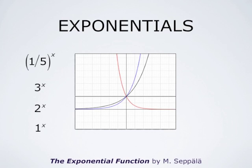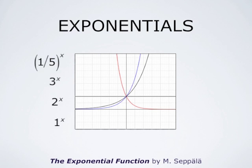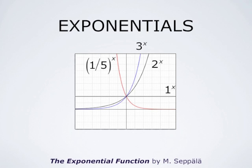This picture shows the graphs of the functions 1/5 to the power x, 3 to the power x, 2 to the power x, and 1 to the power x. Which is which? The red curve is decreasing — that is the graph of 1/5 to the power x. 1 to the power x is always 1, so its graph is the black horizontal line. 2 to the power x is increasing, and 3 to the power x is also increasing but faster than 2 to the power x. So the blue curve is the graph of 3 to the power x.